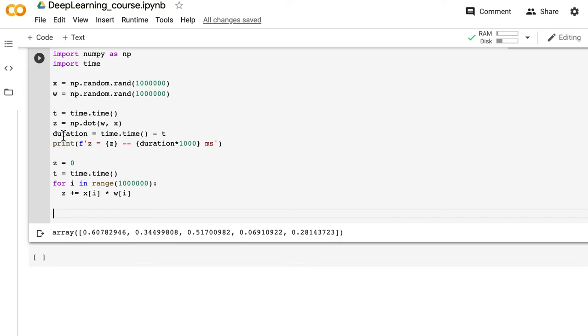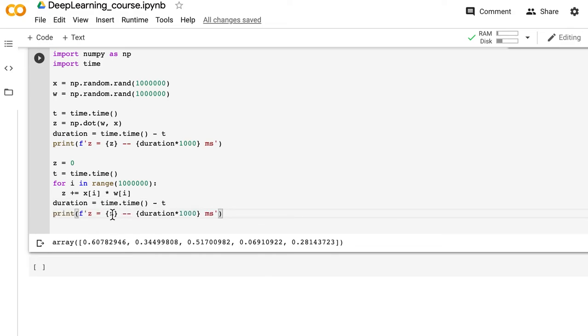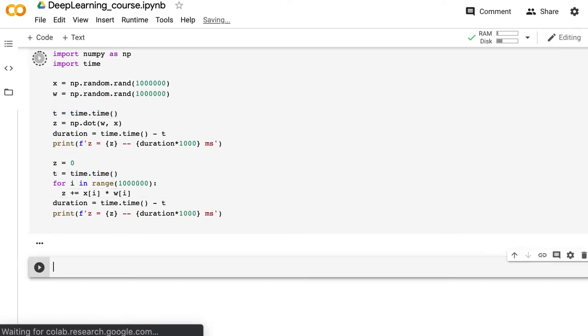We calculate the duration and print the value of z to ensure we're calculating the same thing. Note that we re-initialized the timer to the current time before starting this for loop. Now let's run it.